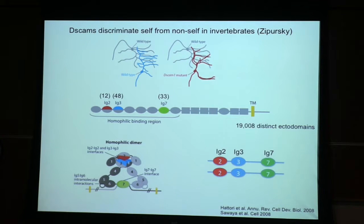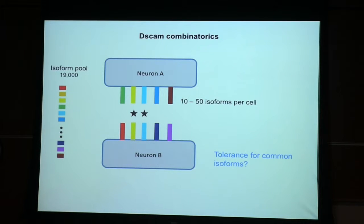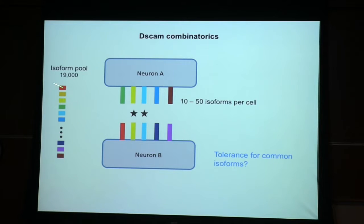Zipursky's lab showed that these proteins are all strictly homophilic — they only bind to each other. That leads to very interesting protein design questions: how do you design 19,000 closely related proteins to only bind to each other? Obviously nature has done it. You have 19,000 distinct proteins and 10 to 50 isoforms per cell. Through stochastic splicing, each neuron will select 10 to 50 of the possible 19,000 choices. Let's say in this simplified figure there are only 6 different isoforms chosen — there may be a thousand copies of each, but 6 different isoforms.